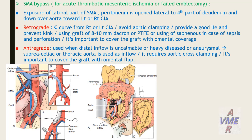Antegrade bypass is used when distal inflow is unreliable — when the iliac artery is heavily diseased or aneurysmal. In that case, inflow is taken from the supraceliac or thoracic aorta, requiring aortic clamping, and the graft is tunneled through the root of the mesentery to the superior mesenteric artery. It is important to cover the graft with an omental wrap.